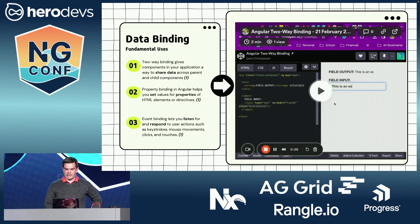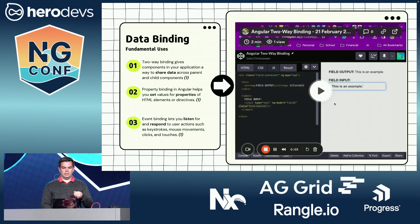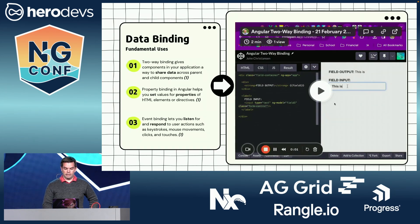The first part is data binding. Data binding has three types. Two-way binding gives us the ability to share data across parent and child components, and this is an important feature for all JavaScript frameworks — to be able to pass from parents to children and to emit up to the parent. Property binding in Angular helps you set values for properties of HTML elements or directives, and then event binding lets you listen for and respond to user actions.